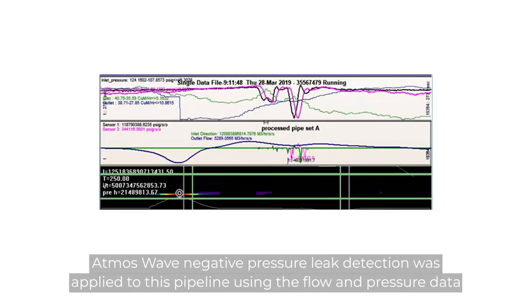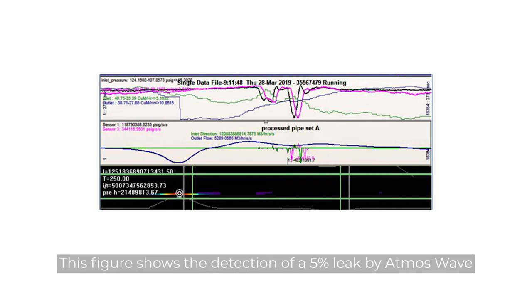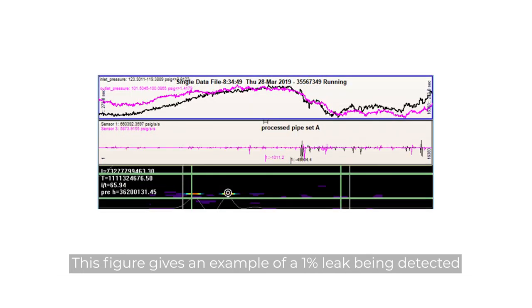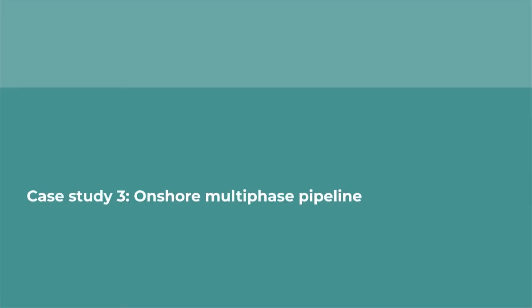Atmos Wave negative pressure leak detection was applied to this pipeline using the flow and pressure data. This figure shows the detection of a 5% leak by Atmos Wave. This figure gives an example of a 1% leak being detected.